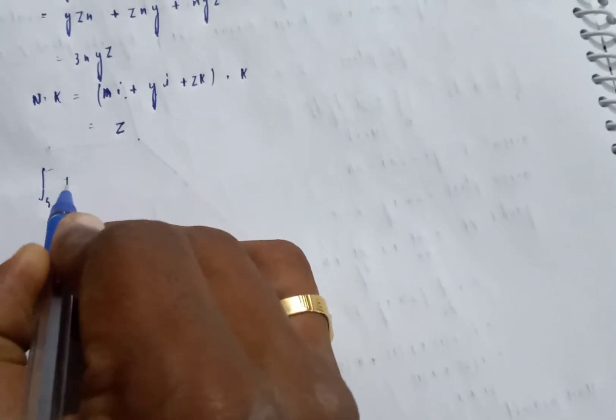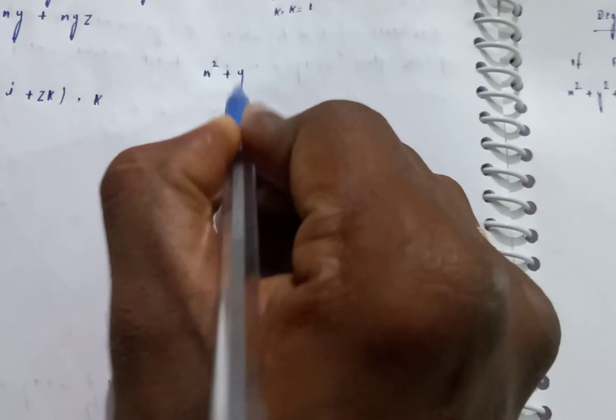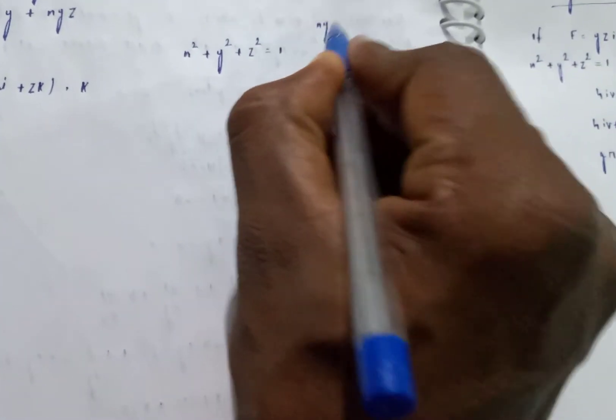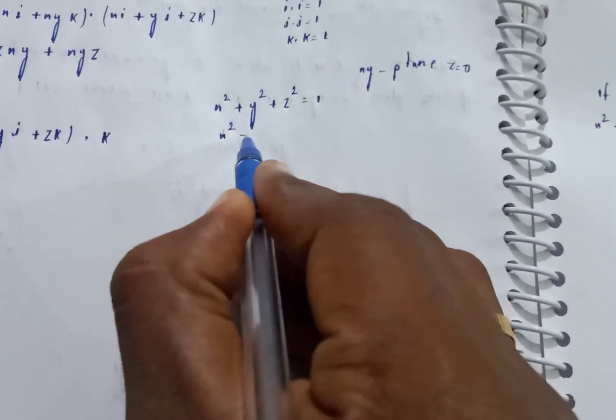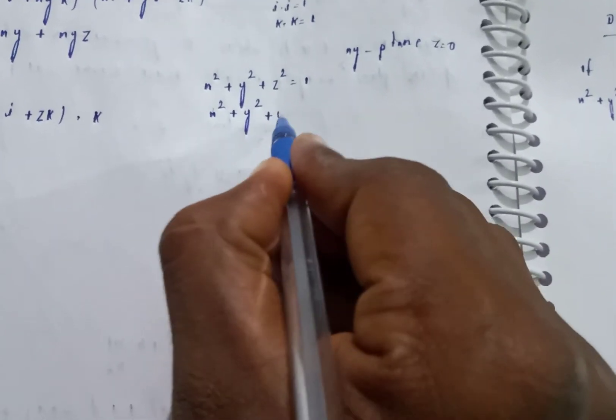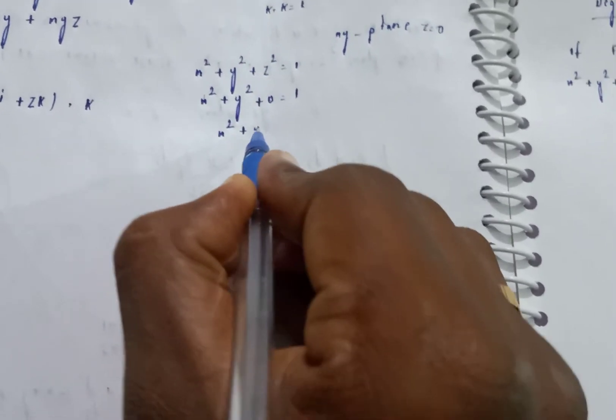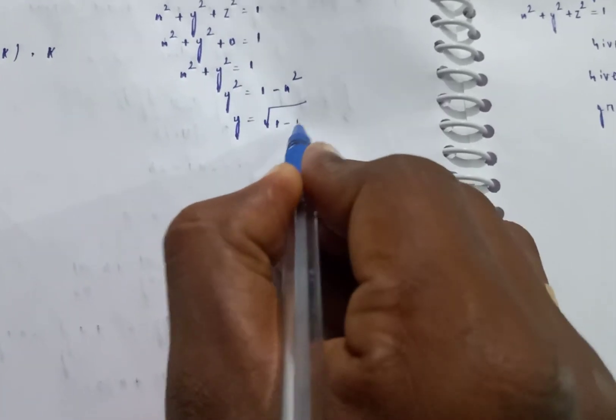Now writing the integral: the surface integral of f dot n ds. The surface is x square plus y square plus z square equal to 1, projected onto the xy-plane where z equals 0. The limits are: x square plus y square equals 1, so y goes from 0 to root of 1 minus x square.